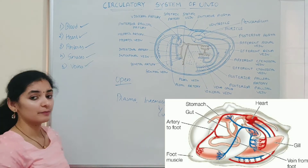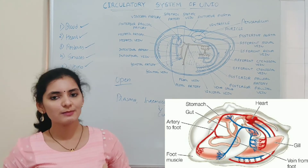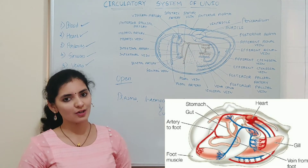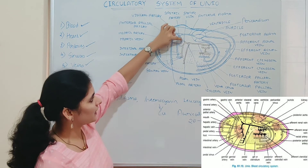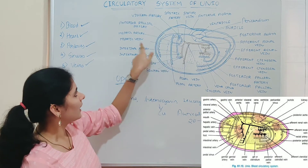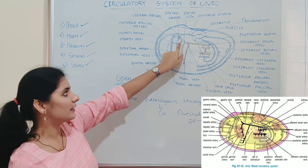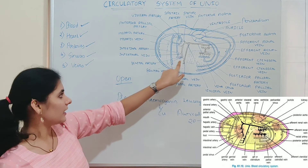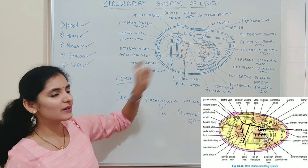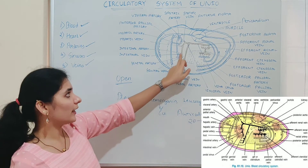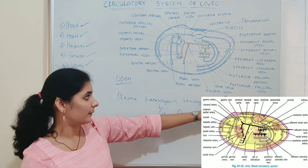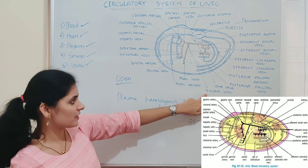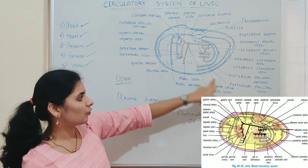The next component is veins. Veins collect venous blood from different parts of the body. The venous blood from visceral organs is collected by smaller veins: the gastric vein from the stomach, the hepatic vein from the liver, the intestinal vein from the intestine, and the genital vein from the gonads. All these veins join together to form the visceral vein. The pedal vein collects venous blood from the foot region, and the visceral vein joins with the pedal vein to form the vena cava.